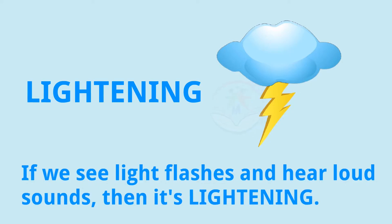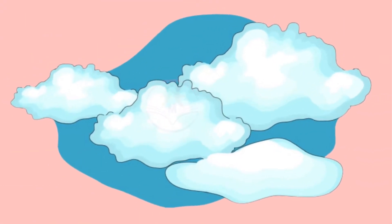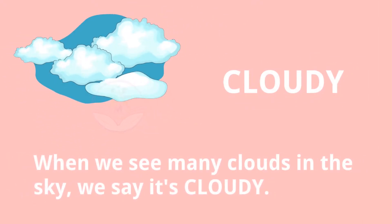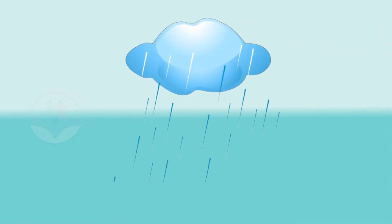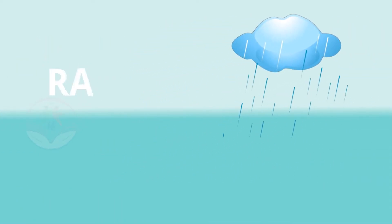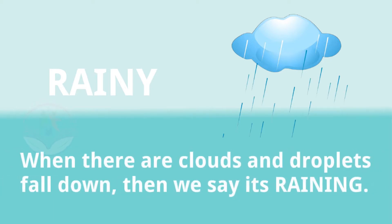Lightning. If we see light flashes and hear sounds, then it's lightning. Cloudy. When we see many clouds in the sky, we say it's cloudy. Rainy. When there are clouds and droplets fall down, then we say it's rainy.